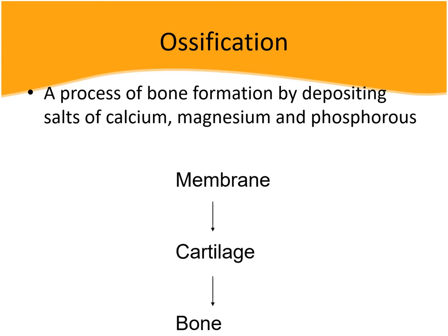Slowly this membrane starts developing into a cartilage. The cartilage is a soft bone — because of the deposition of calcium and minerals, the membrane gets converted into cartilage, and the cartilage ultimately develops into a bone which is strong and hard. So cartilage is the intermediate stage where the bone is soft and not yet very strong or hard. The process of ossification goes: membrane converts to cartilage, and cartilage converts to bone.